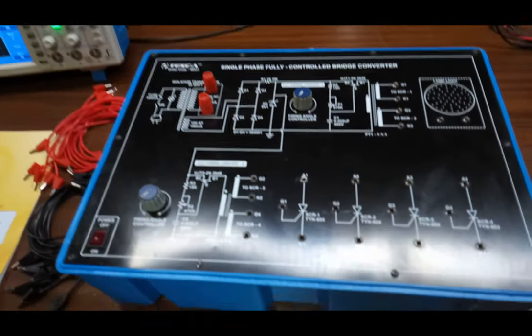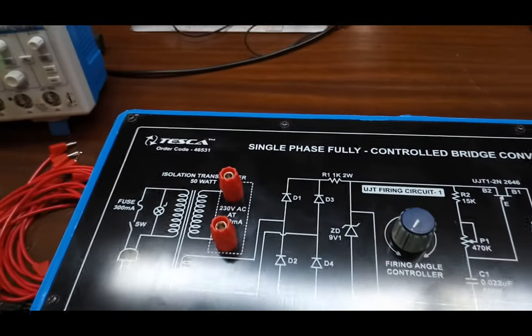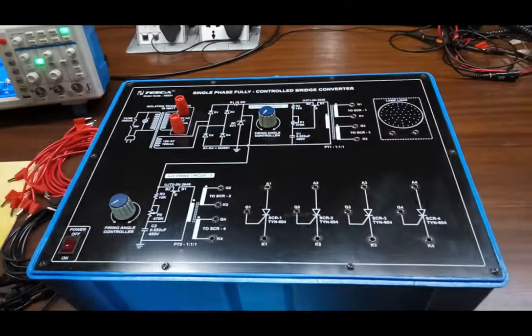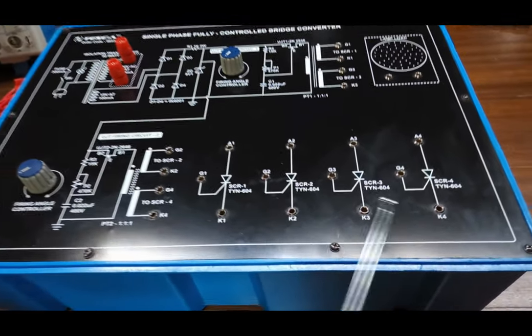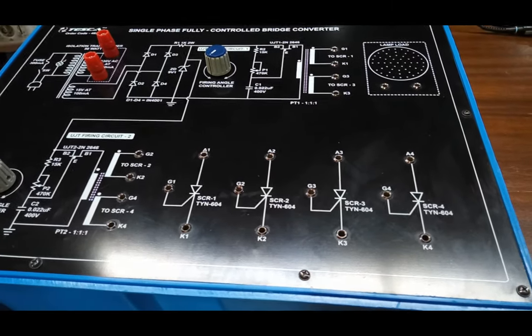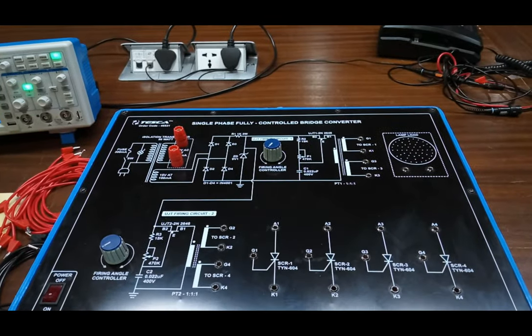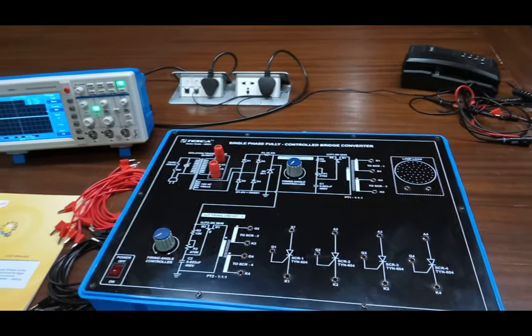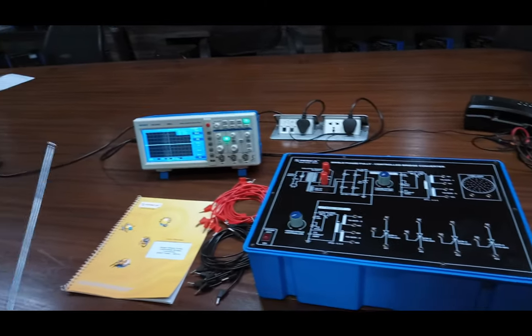This is our trainer kit. The order code for this trainer kit is 46531. This is a single phase fully controlled bridge converter. You can see the circuit of UJT firing circuit 1 and this is the circuit of UJT firing circuit 2. In this, we are using 4 SCR and we will make a bridge converter from these SCR using patch cord. We will understand how this single phase fully controlled bridge rectifier works with a resistive load and observe the waveforms of this load.